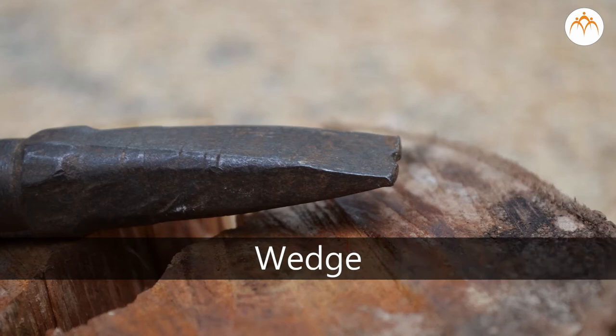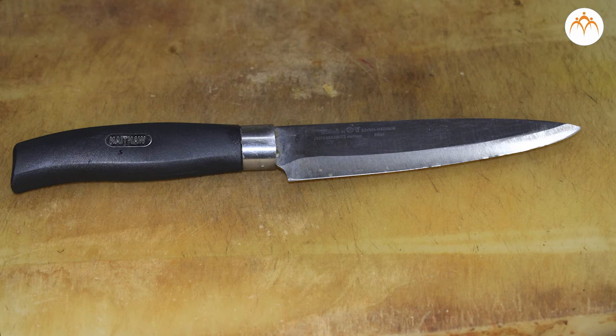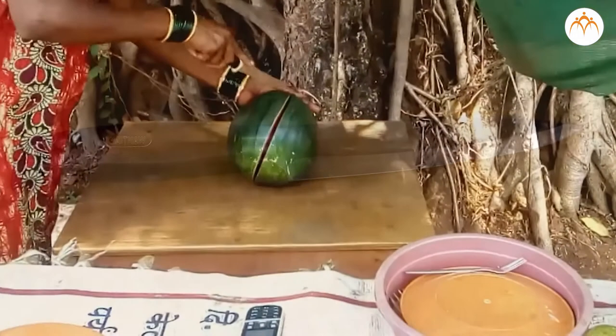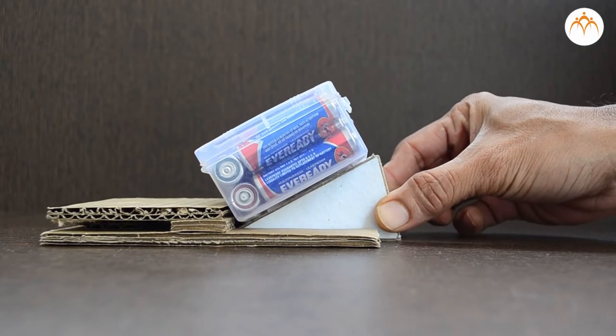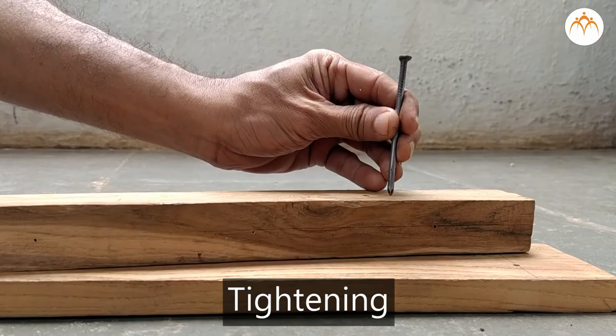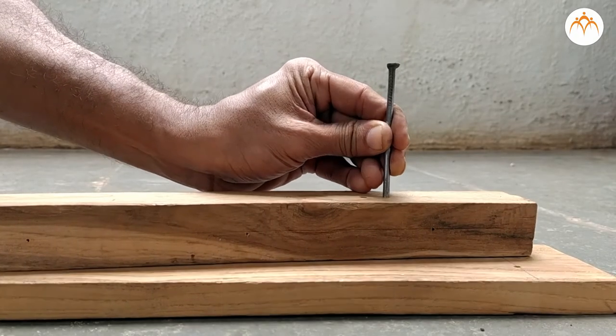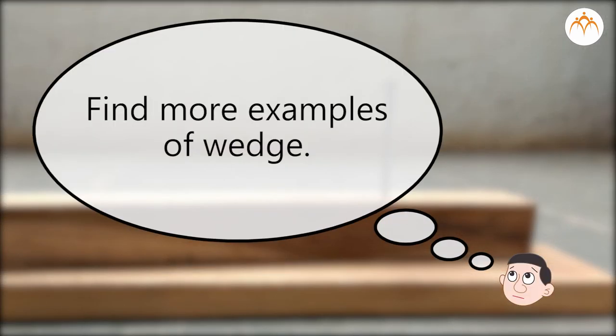Summary. The wedge is another kind of inclined plane. It is a sloping solid that comes to a point. The real difference is in the movement. The splitting, holding, and tightening action of the wedge is used everywhere. Can you find more examples of this simple device called wedge?